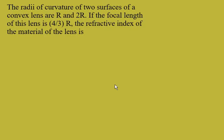The radii of curvature of two surfaces of a convex lens are R and 2R. The focal length of the lens is 4 by 3 R. We need to find the refractive index of the material of the lens.